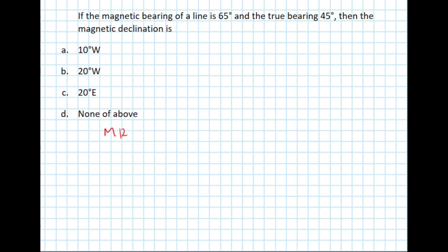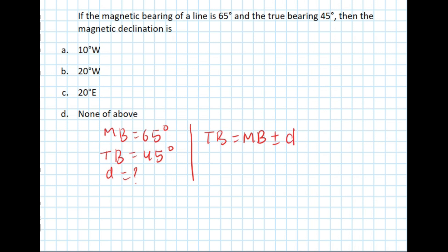The next question: the magnetic bearing of a line is 65 degrees and the true bearing is given as 45 degrees, so we need to find the declination. We have the formula: true bearing equals magnetic bearing plus or minus declination. True bearing is 45 degrees, so the left-hand side is 45 degrees and the right-hand side is 65 degrees.